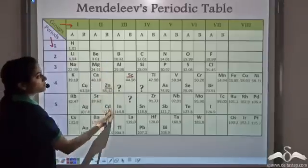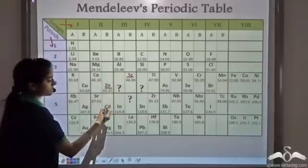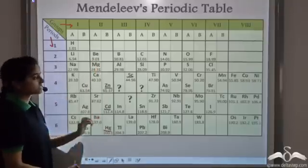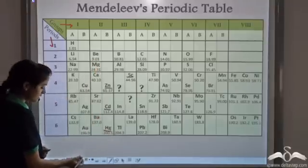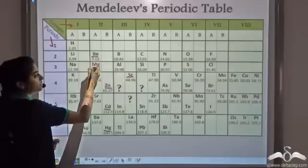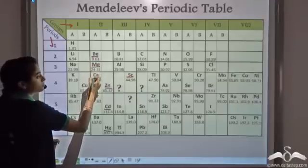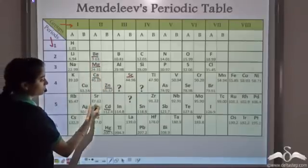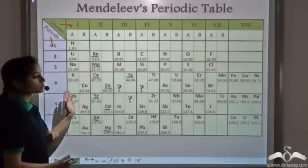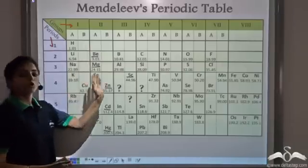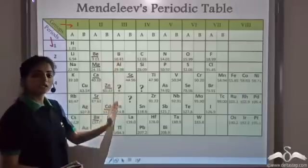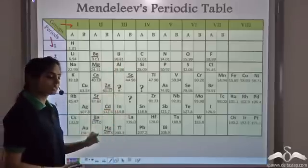So all the elements in a particular group — in this case zinc, cadmium, mercury — they have the same properties. And the elements in group A, that is beryllium, magnesium, calcium, strontium and barium, they have the same properties. This is true for all the elements in the periodic table: all elements belonging to a particular group have the same properties.